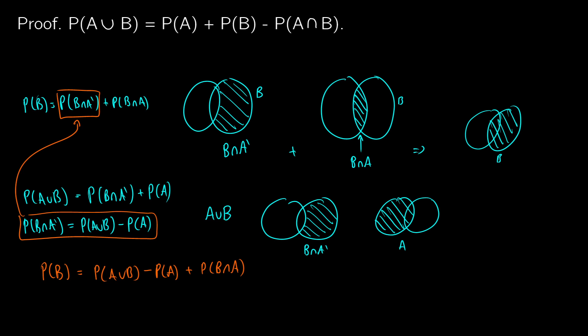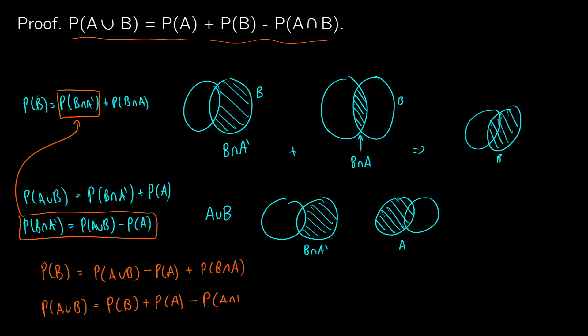Rearranging that result, we get that P(A ∪ B) = P(B) + P(A) − P(B ∩ A), which is the same as A intersection B. By examining these two diagram-based facts and combining the formulas, we've completed the proof of this inclusion-exclusion principle, and it can be extended to more than just two events.